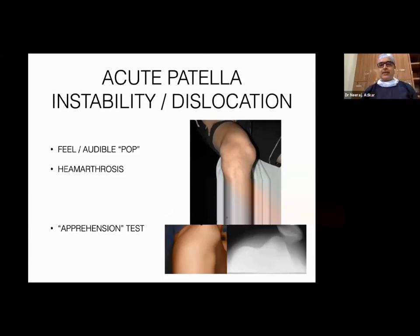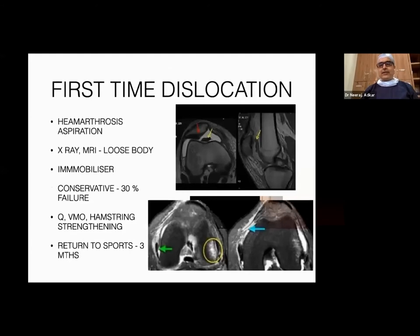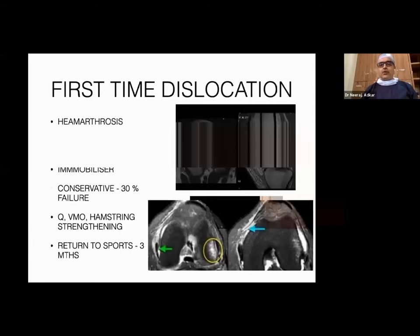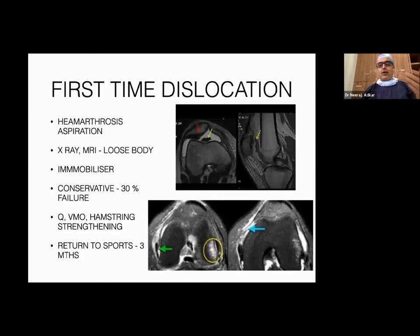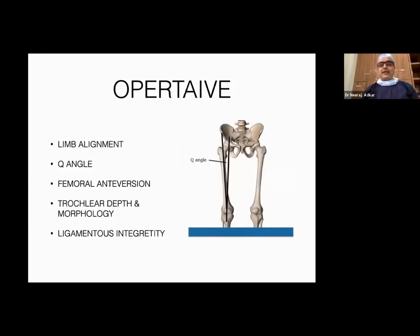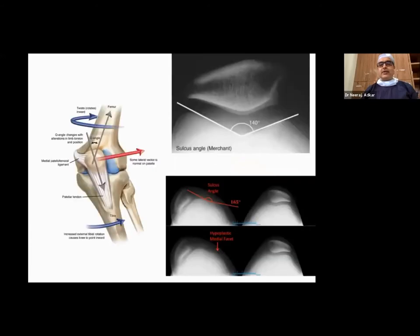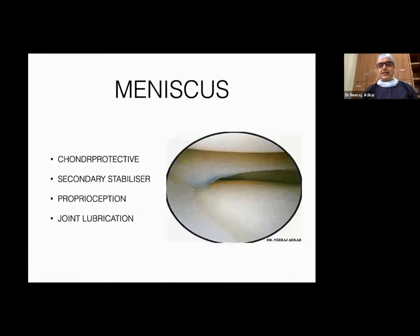With recurrent dislocation, the patient develops apprehension — if you try to push the patella outward, the patient will stop you fearing it will dislocate. This is called the apprehension test. MRI is useful to diagnose loose bodies — cartilage fragments that remain in the joint after the patella relocates — causing pain and locking sensation. These loose bodies need to be tackled arthroscopically.